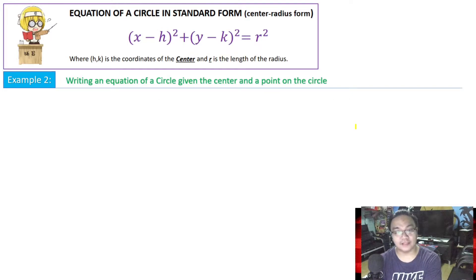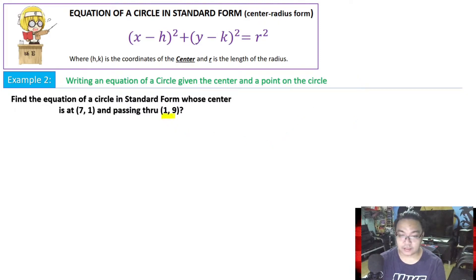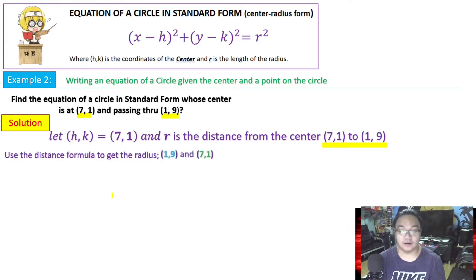Example 2: Writing an equation of a circle given the center and a point on the circle. Find the equation of a circle in standard form whose center is at (7, 1) and passes through the point (1, 9). Here (1, 9) is a point on the circle and (7, 1) is our center. To find the radius, we must find the distance between the center and the point on the circle.